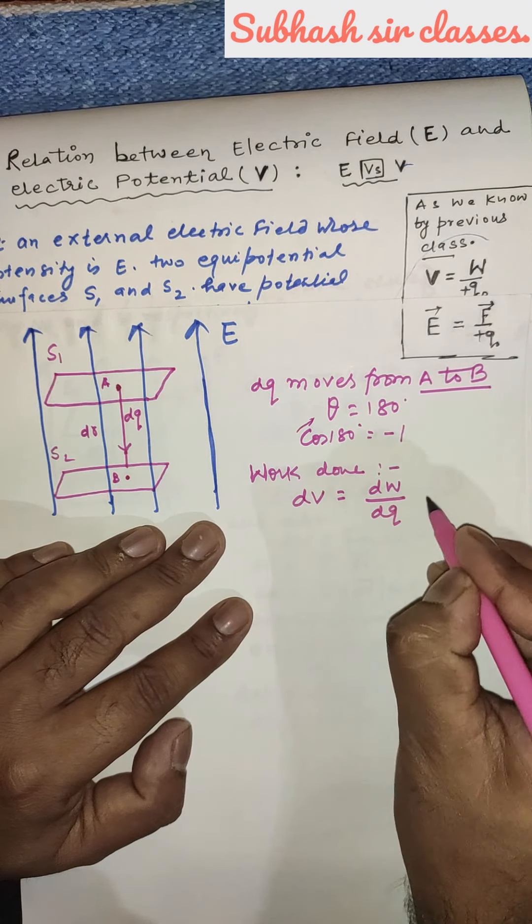Now, using the electric field intensity formula E = F/Q (test charge), since the electric field is uniform and the charge is elementary, F is the same throughout. Cross-multiplying gives us F = E·DQ. This is Equation 3.